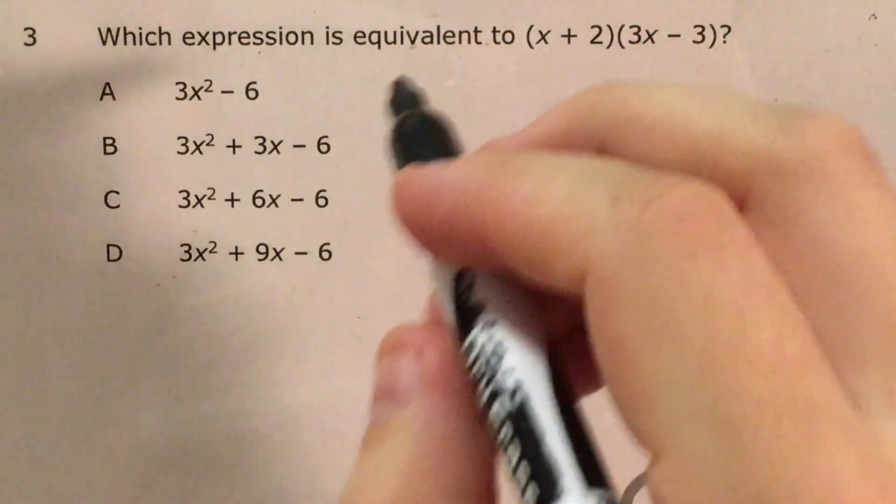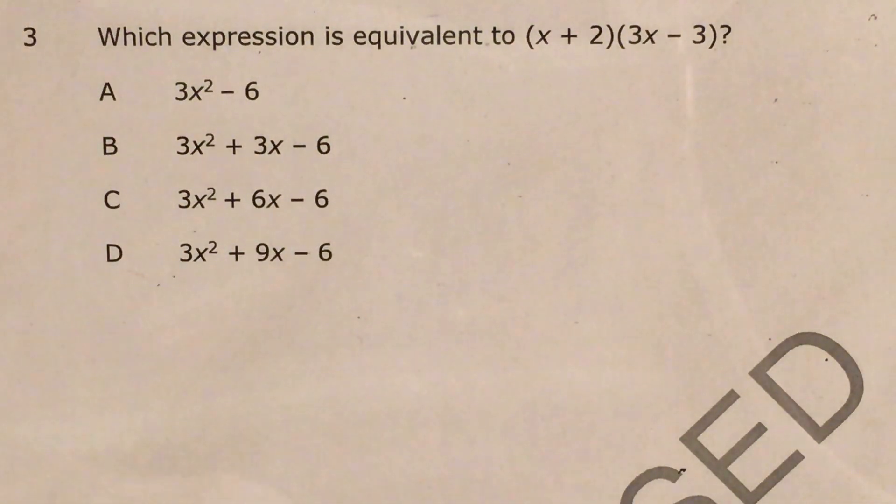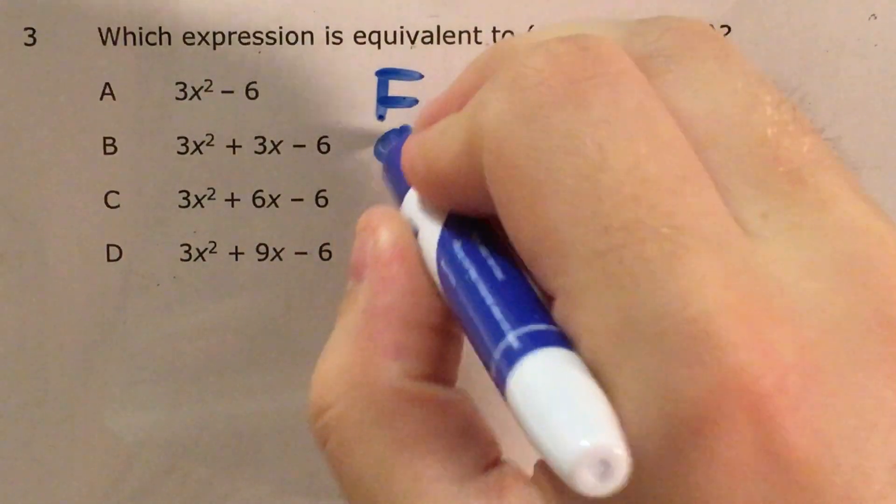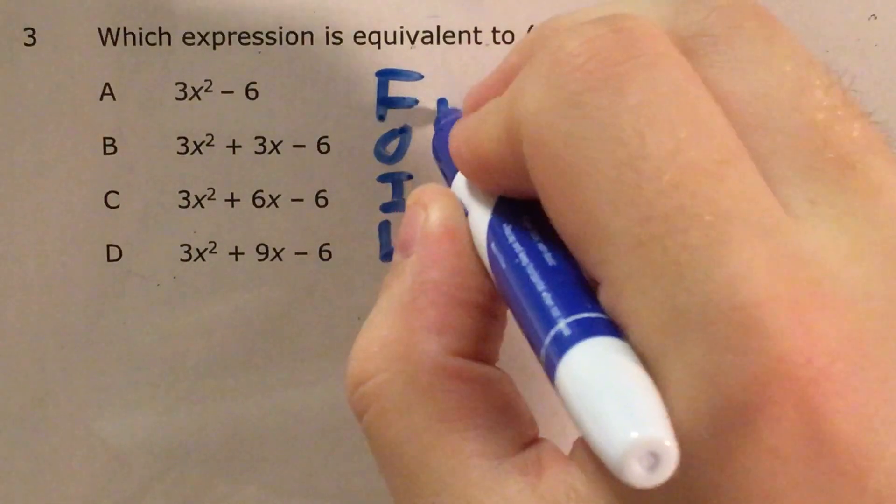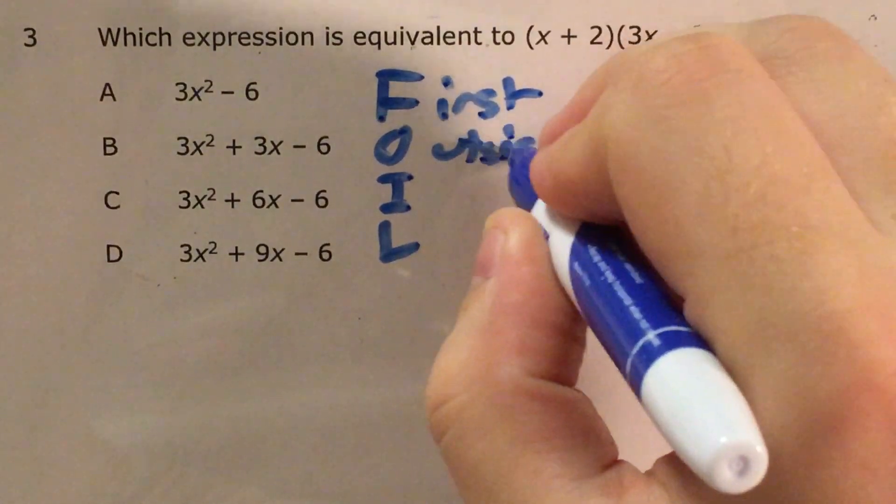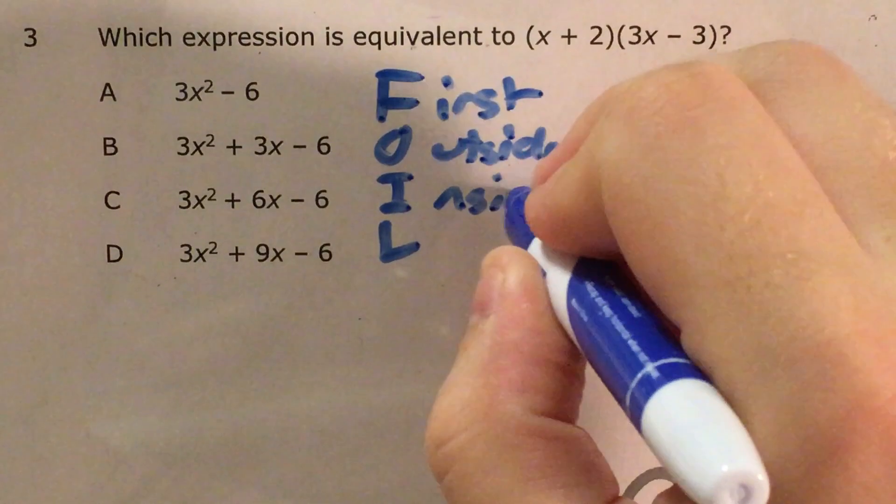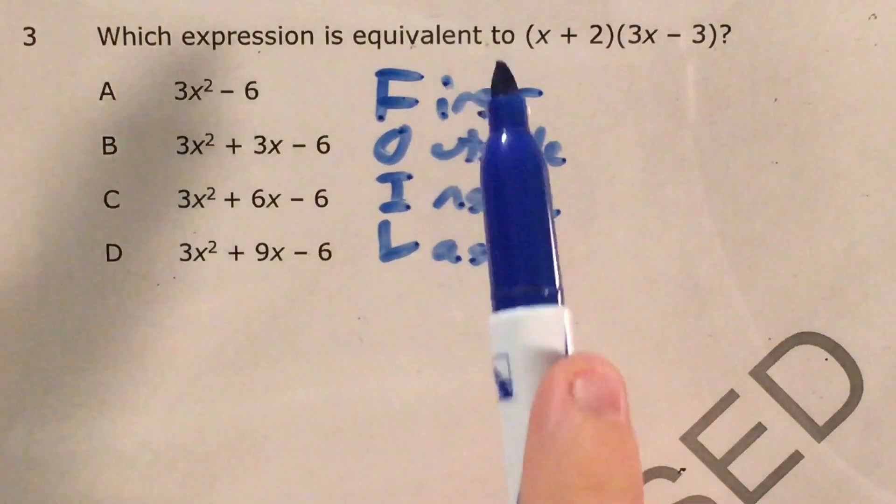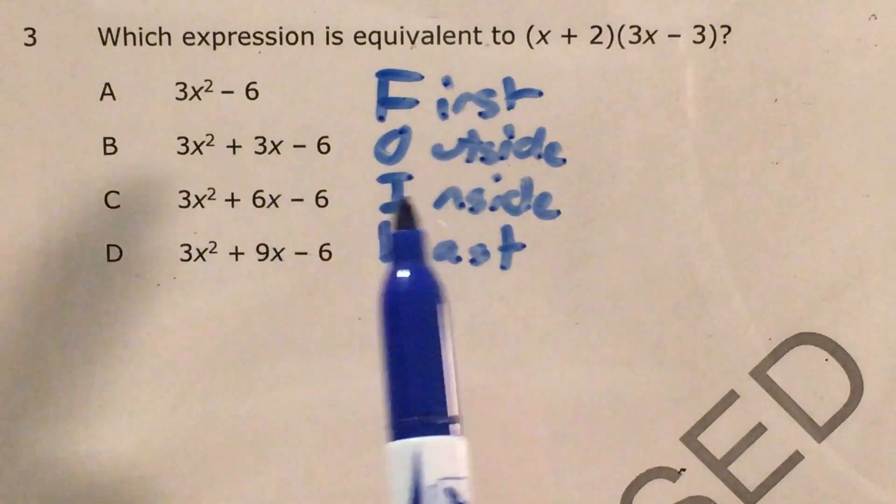If I want to talk about what FOIL means, the basic idea of FOIL is first, outside, inside, last.